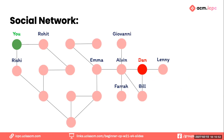A good place to start is: how many phone calls do you need between Alvin and Dan? Alvin can reach Dan in one phone call. How can we use that information to find the shortest path between any of Alvin's friends and Dan? Take a few minutes to ponder it on your own.